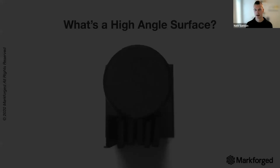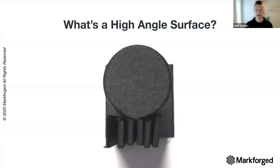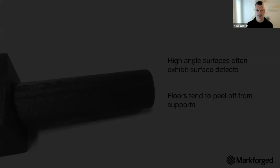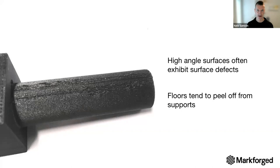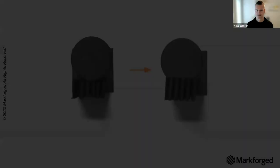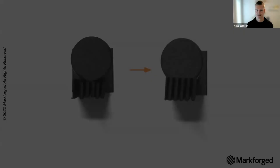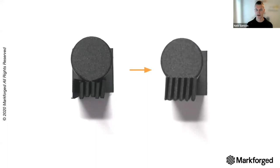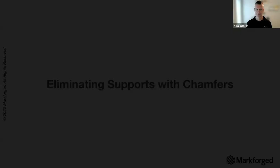For high-angle surfaces greater than about 80 degrees, you're not going to have a great experience. You'll see separation from supports and poor surface quality on the underside — a really beautiful part everywhere else with an eyesore on the bottom, and reduced dimensional accuracy. A real simple way to mitigate that: create a small flat on the bottom of your part. It may have no effect on function, but now you've got a better-looking part with better surface finish and dimensional accuracy.